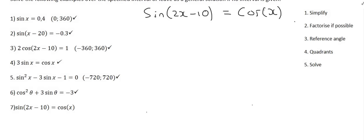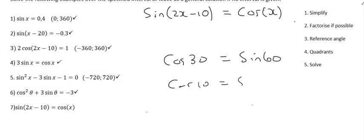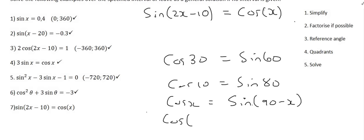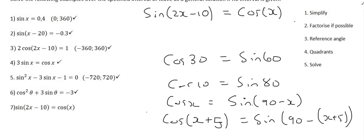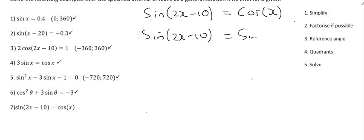This requires a different identity: sin and cos complement each other. For example, cos(30) equals sin(60) because they add up to 90. So cos(x) equals sin(90 minus x), and cos(x plus 5) would equal sin(90 minus (x plus 5)). So we can change this cos(x) into sin(90 minus x). Now we have sin on both sides, and at this step you are allowed to drop the sin.